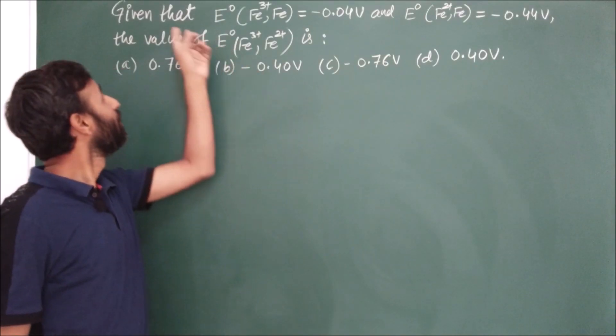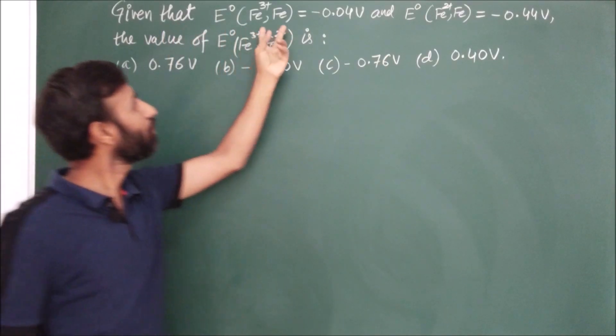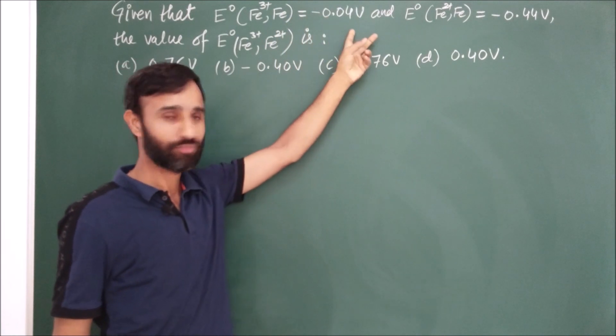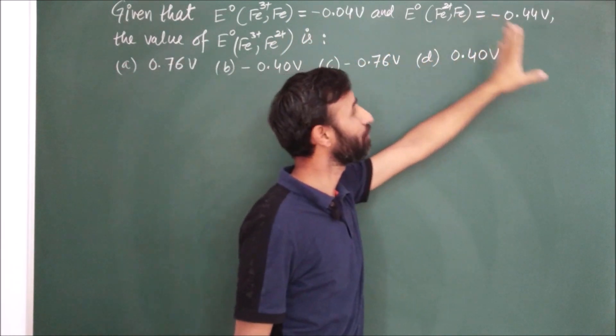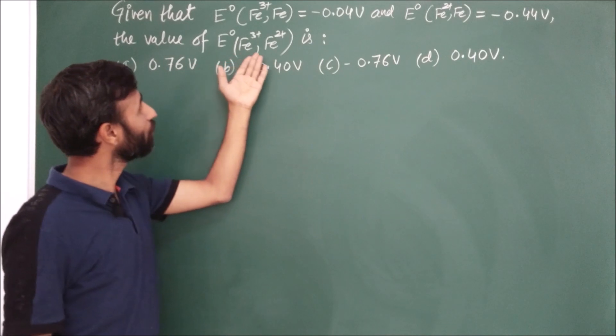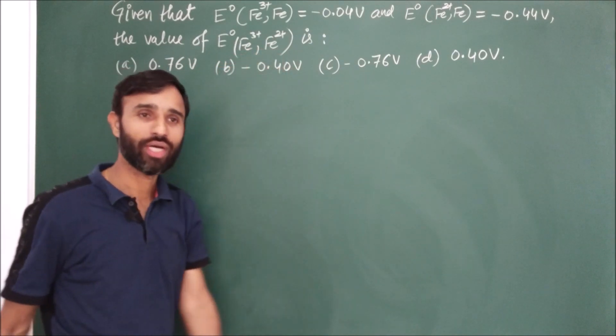This is the last question. Given that E0 of Fe3+ to Fe is given, E0 of Fe2+ to Fe is given, and we have to calculate E0 for Fe3+ to Fe2+.